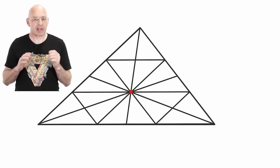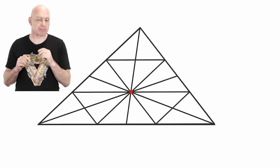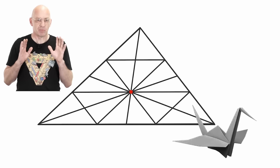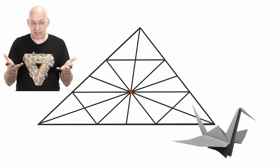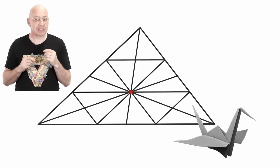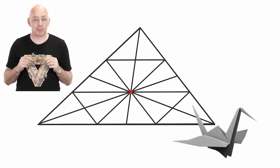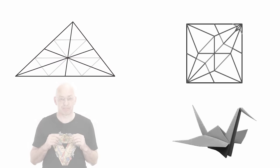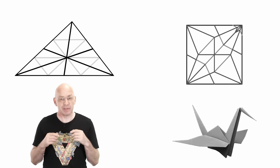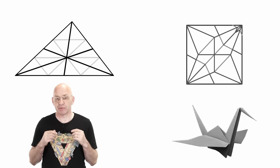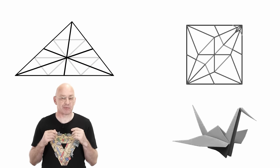have you ever done any origami before? For example, have you ever folded a paper crane? Well, when you unfold the crane, you get this interesting crease pattern which really is the blueprint for the crane design. Similarly, our median intersection pattern is a blueprint for everything that happens in our triangle folding adventure.